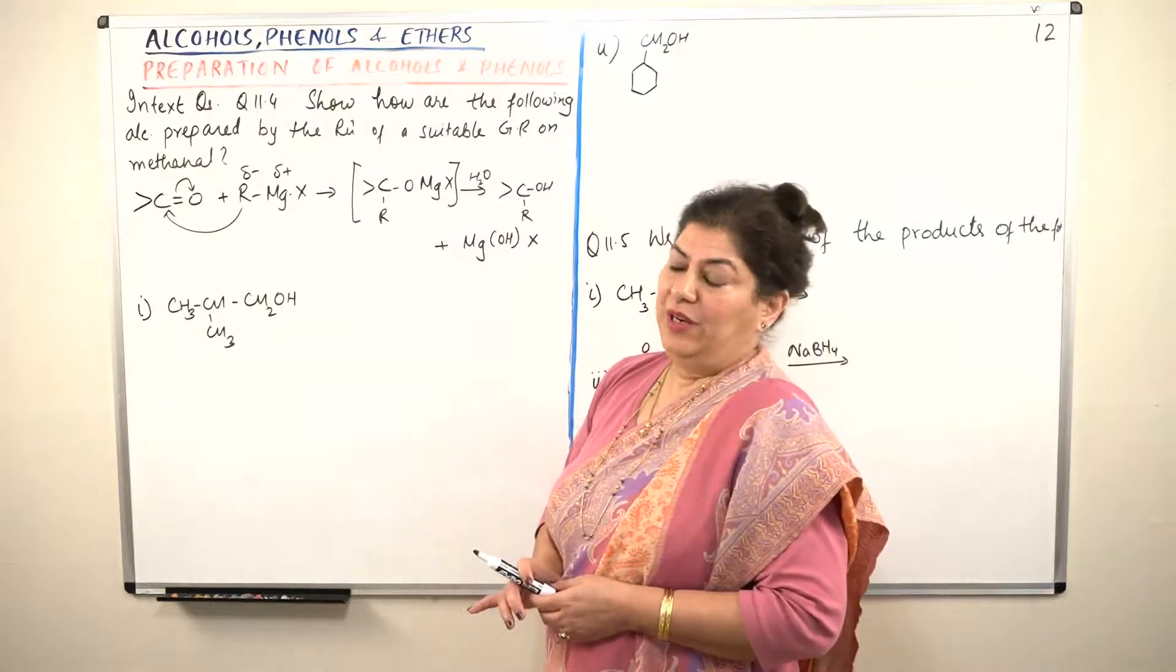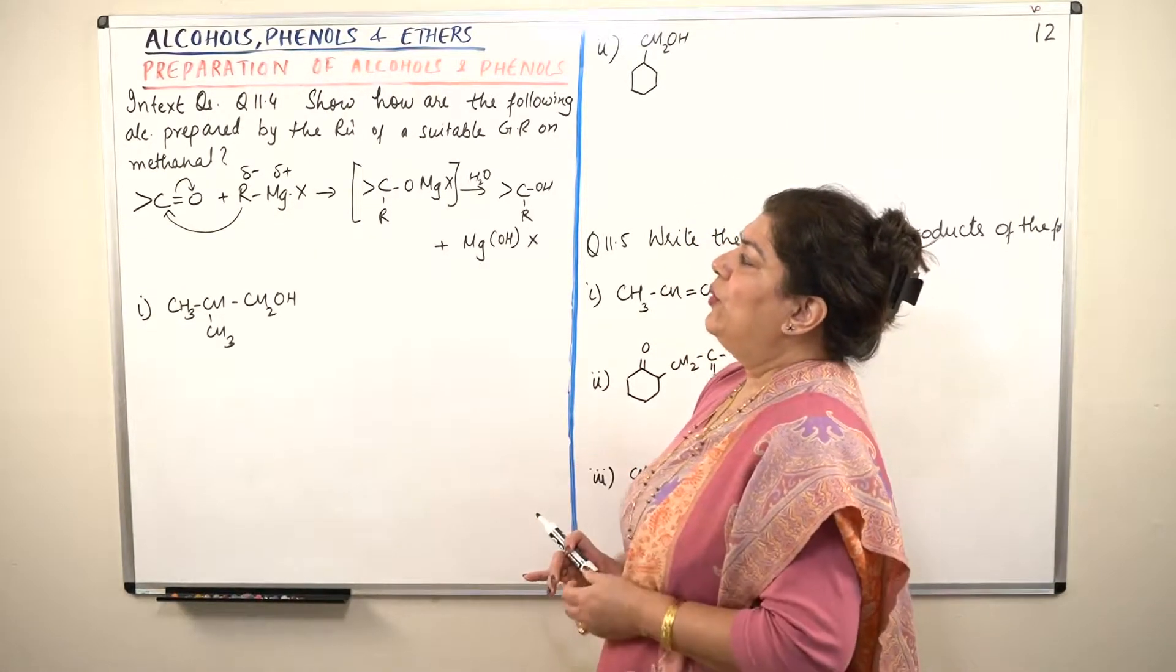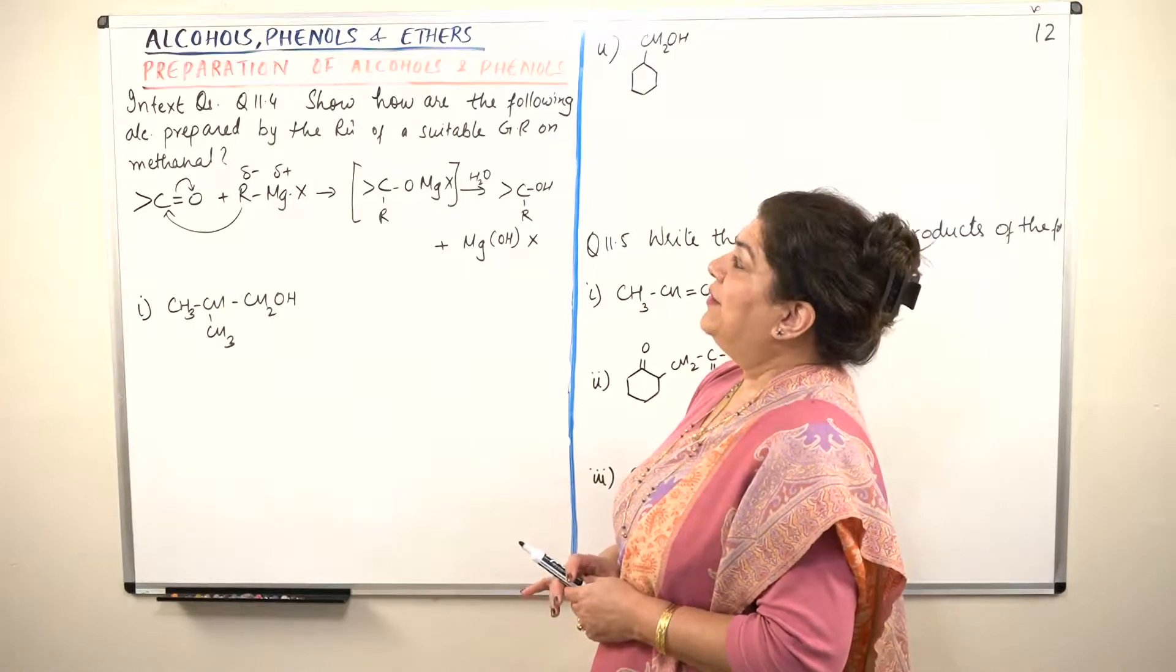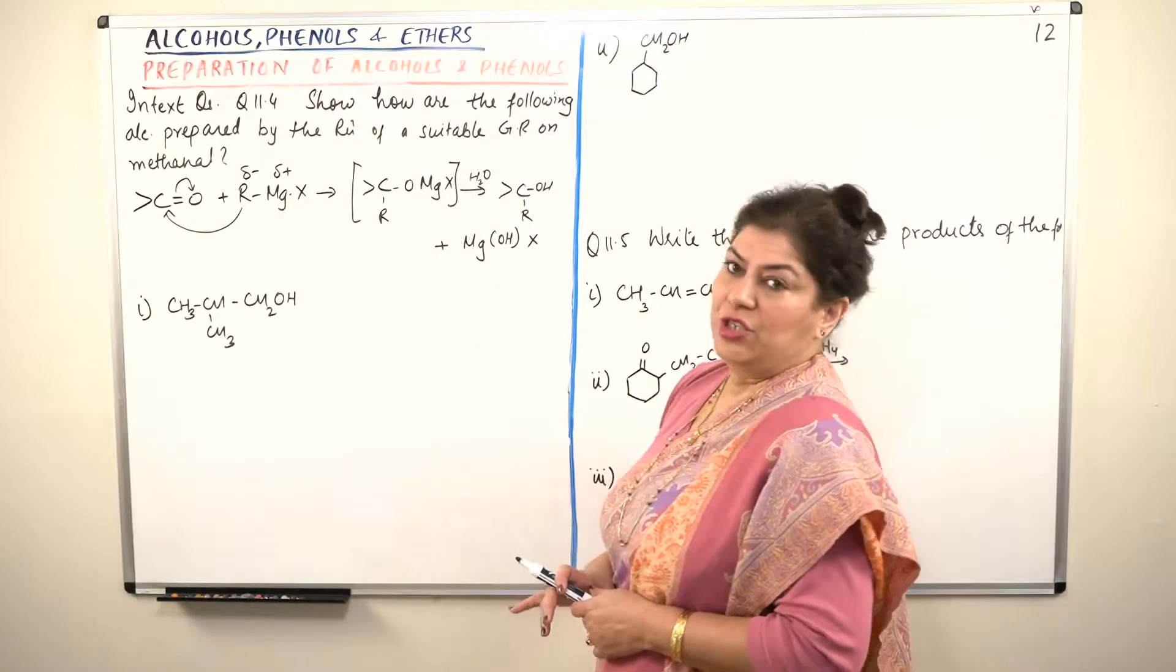Question 11.4, it says, show how are the following alcohols prepared by the reaction of a suitable Grignard reagent on methanal.